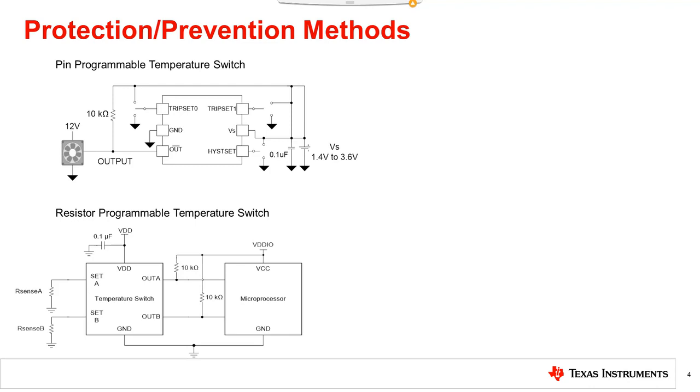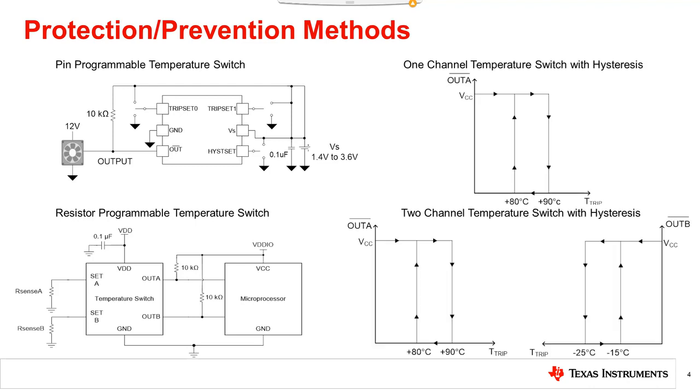With temperature switches, you can have either one channel or two channel devices. A one channel device will set one temperature threshold for protecting your control system. A two channel device will work similarly to a one channel device except you can set two temperature thresholds to protect your system, for example, one hot temperature and one cold temperature.